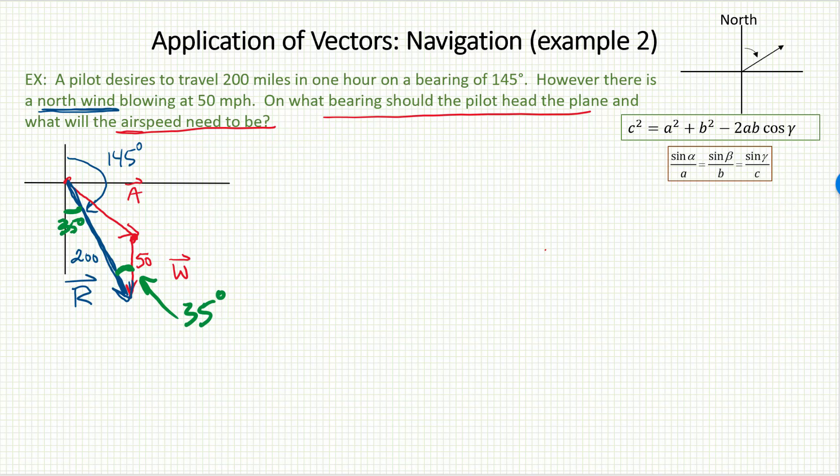And that's exactly what I needed in this picture. I have another SAS situation. I can find the length of A, that missing side, by using the law of cosines once again. We can do the math quickly.